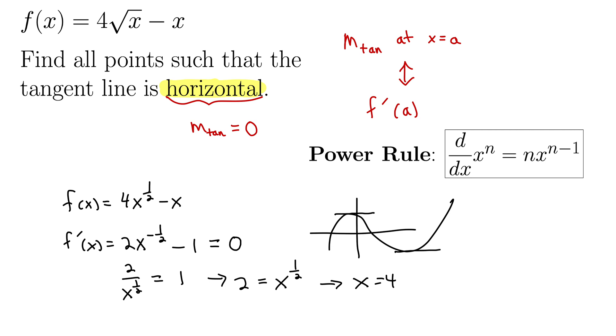Okay, so this tells us we have one point with a horizontal tangent line. That point is at x equals 4. But that's not really a point yet. A point has an x and a y value. So we're halfway there. I'd say we're more than halfway there.